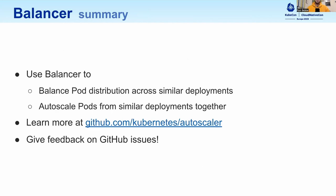In summary, the new balancer resource allows you to define how pods should be distributed across similar deployments. You can additionally define horizontal pod autoscaling on the balancer object to autoscale the pods together. You can learn more at the GitHub repository page, kubernetes/autoscaler, and we're waiting for your feedback. Thanks.